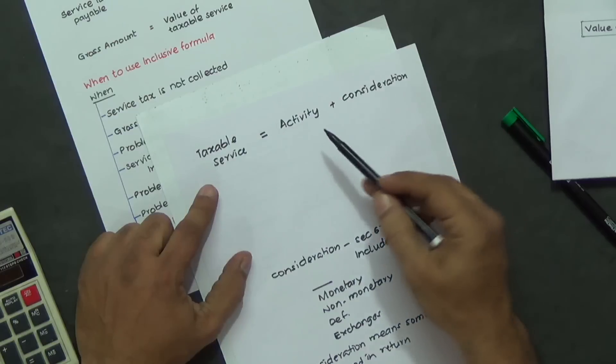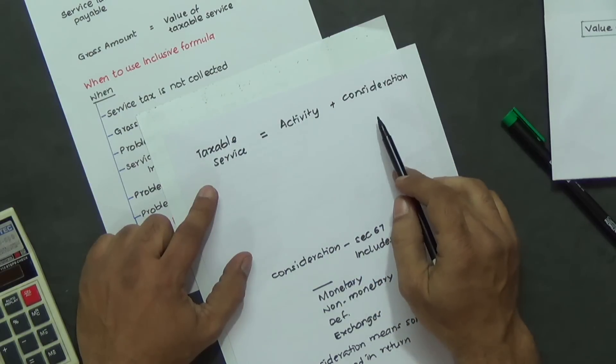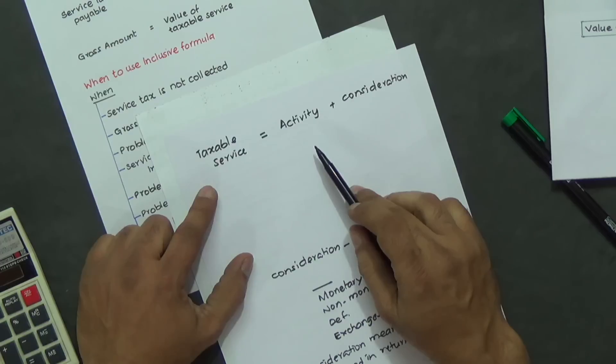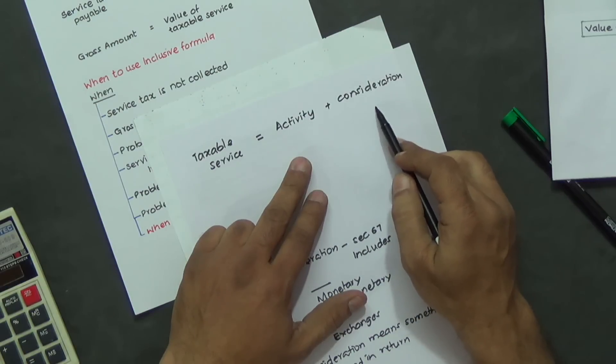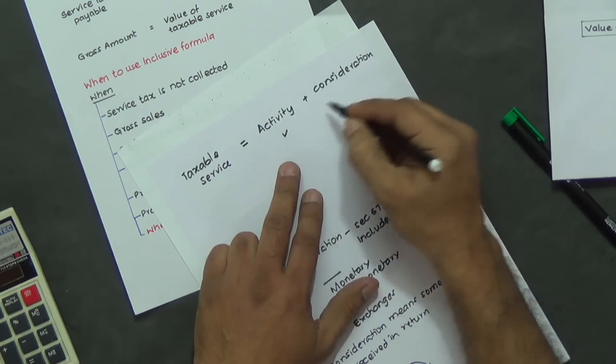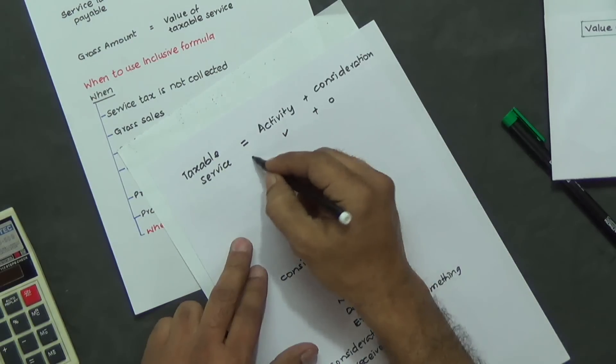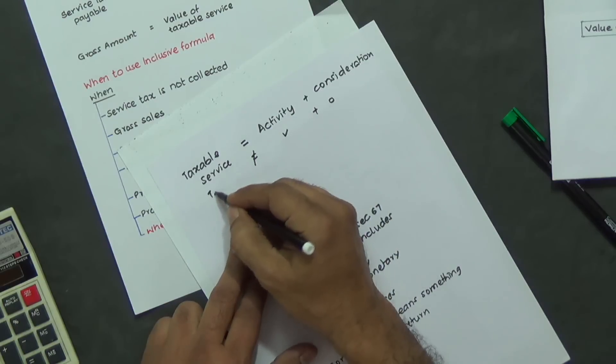I'll give an example where only activity is there but no consideration. For instance, ISKCON people give free food to children. So that is only an activity. Consideration zero. So only activity, consideration zero does not result in taxable service.